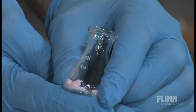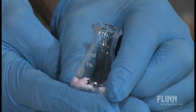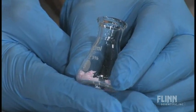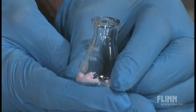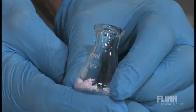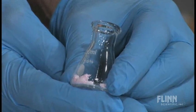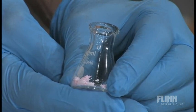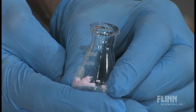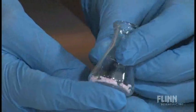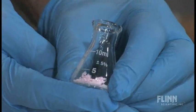Manganese 2 chloride that's anhydrous without water in it is a very, very light pink solid. Manganese 2 chloride dihydrate is a fairly bright pink solid.